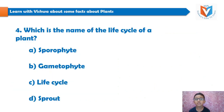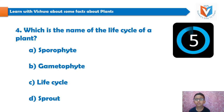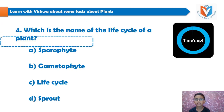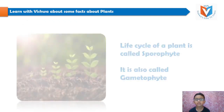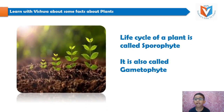And the fourth question is: which is the name of the life cycle of a plant? Your 5 seconds time starts now... time's up. And the answer is sporophyte. The life cycle of a plant is called sporophyte. It is also called gametophyte.